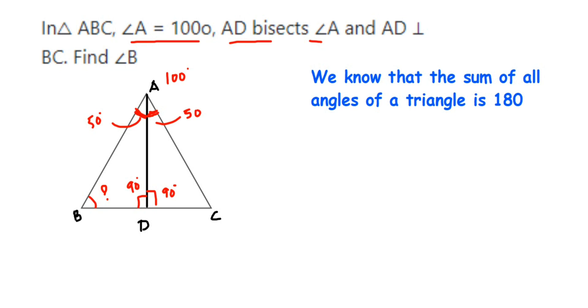triangles: that the sum of all angles of a triangle is 180 degrees. If I add up all the angles of a triangle, it will be 180 degrees. So in this case, I am going to take triangle ADB because